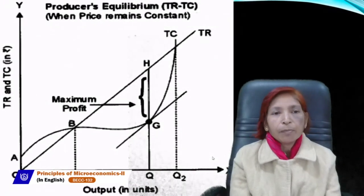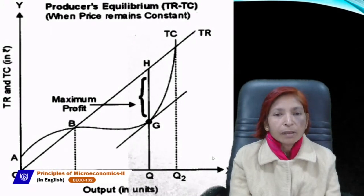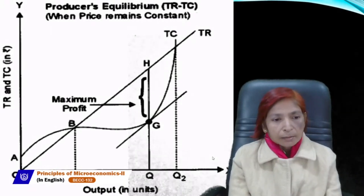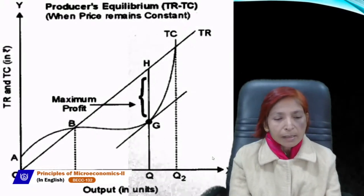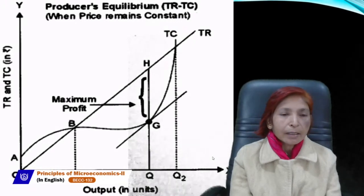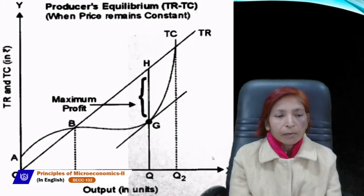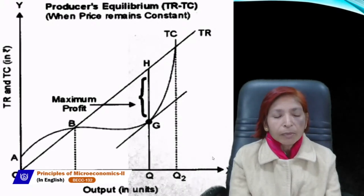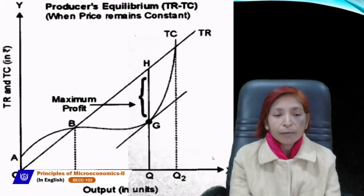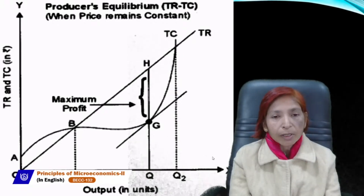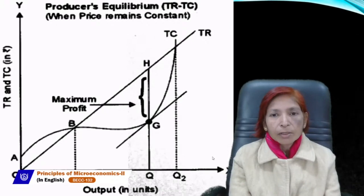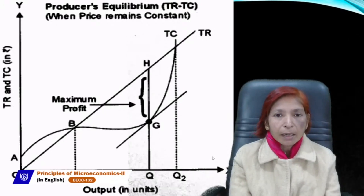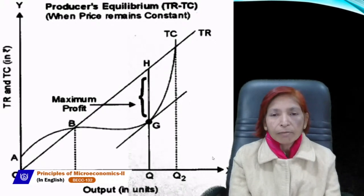Next is the diagram for producer equilibrium using the TR-TC approach. On the X-axis, write output; on the Y-axis, write TR and TC. The TR line is always a 45-degree line starting from the origin, because price remains constant under perfect competition and TR increases proportionately. TC always starts from the Y-axis, not from the origin, since TFC can never be zero.